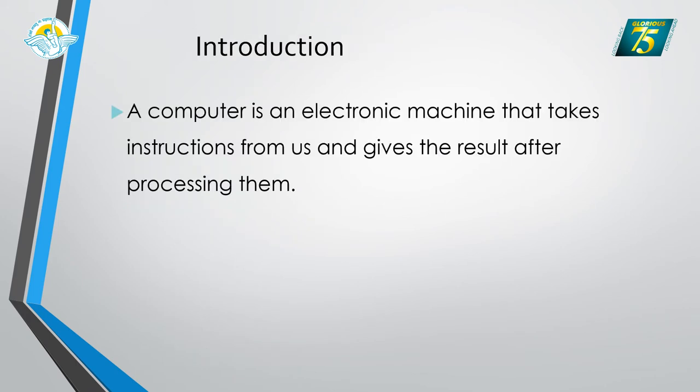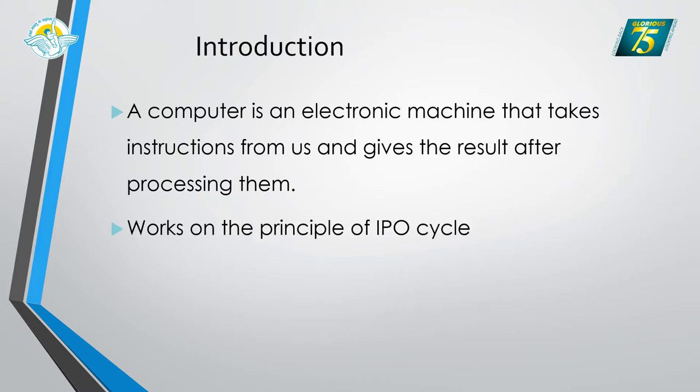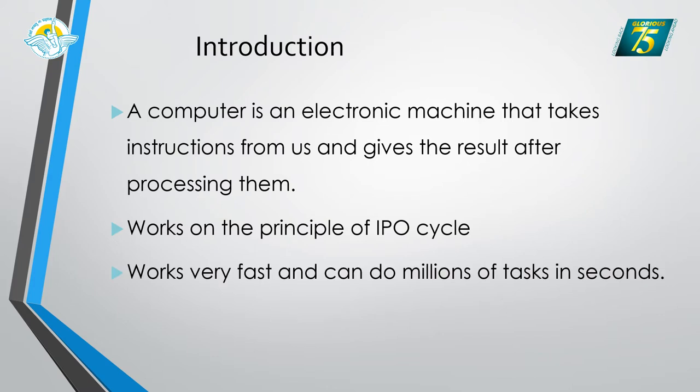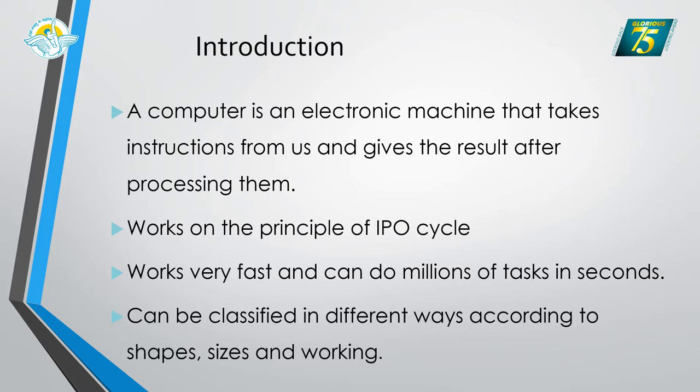A computer is an electronic machine that takes instructions from us and gives the result after processing them. This is called the IPO cycle, which we have learnt about in our previous class. It works very fast and can do millions of tasks in seconds. It can be classified in different ways according to shape, size, and also according to its working.